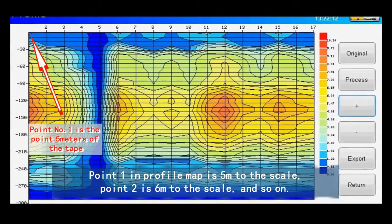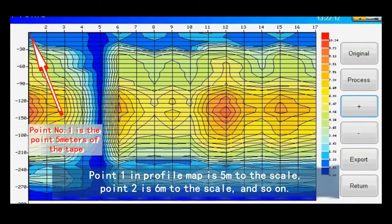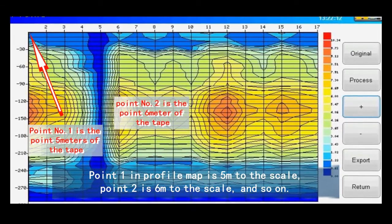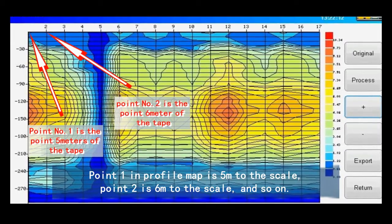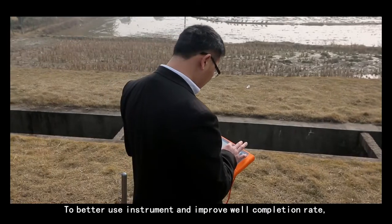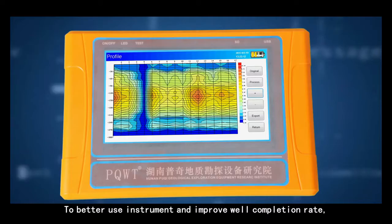Point one in profile map is 5 meters to the scale. Point two is 6 meters to the scale and so on.